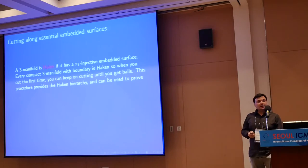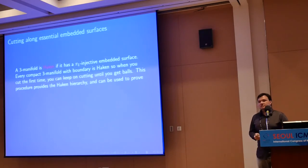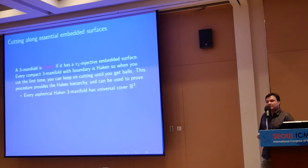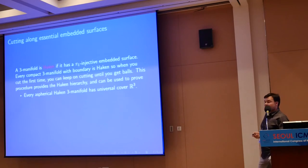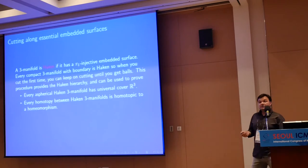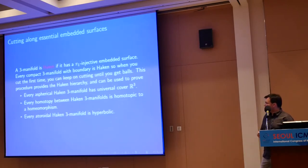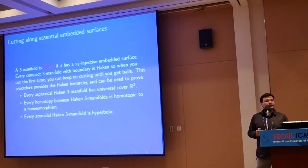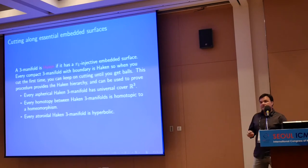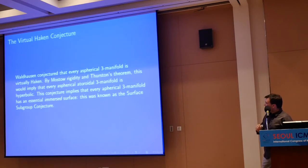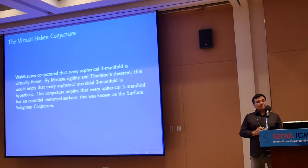Three-manifolds that have a subsurface are Haken. We assume all manifolds are closed. Some nice properties of Haken three-manifolds: they're aspherical, and aspherical Haken three-manifolds have universal cover R³. Homotopy equivalence among Haken three-manifolds is essentially the same as them being homeomorphic. The famous theorem of Thurston says that atoroidal Haken three-manifolds are actually hyperbolic, meaning their universal cover can be seen as hyperbolic three-space, obtained by acting by isometries of the Poincaré three-space.